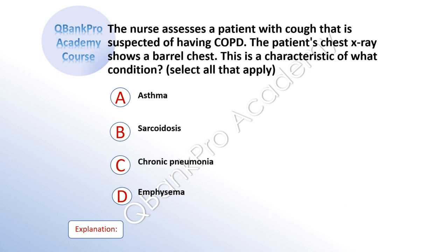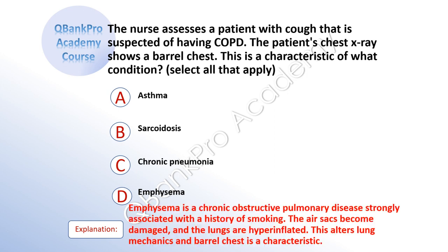The nurse assesses a patient with cough that is suspected of having COPD. The patient's chest x-ray shows a barrel chest. This is a characteristic of what condition? Select all that apply. A, asthma. B, sarcoidosis. C, chronic pneumonia. D, emphysema. The correct answer is D, emphysema. Explanation: Emphysema is a chronic obstructive pulmonary disease strongly associated with a history of smoking. The air sacs become damaged and the lungs are hyperinflated, which alters lung mechanics and barrel chest is a characteristic.